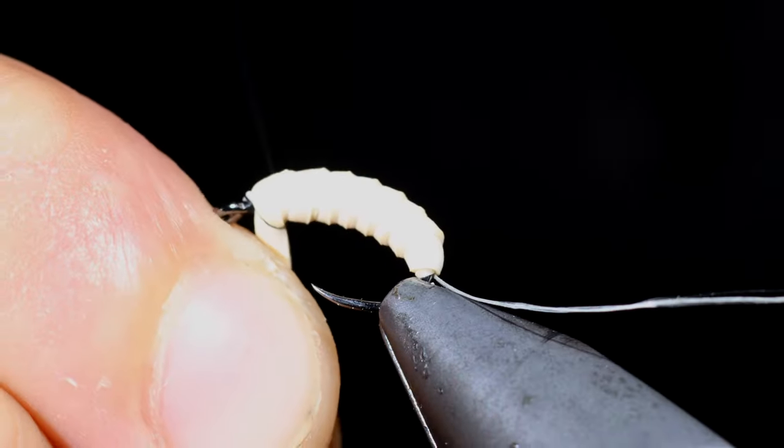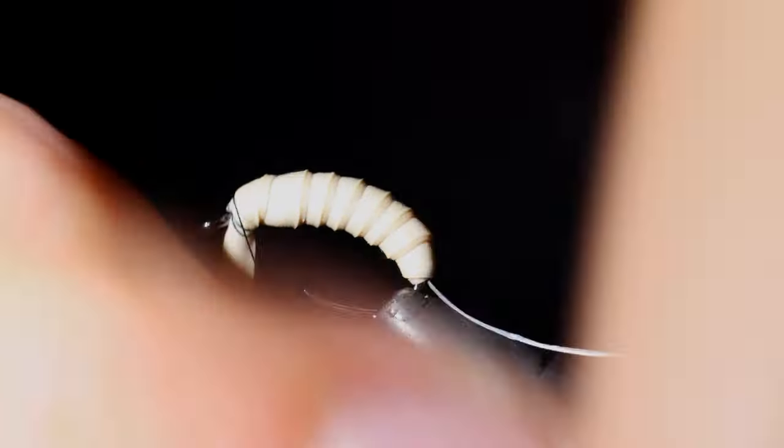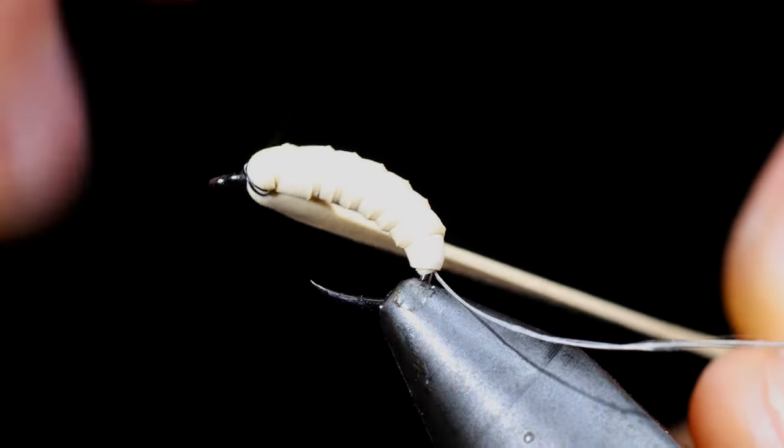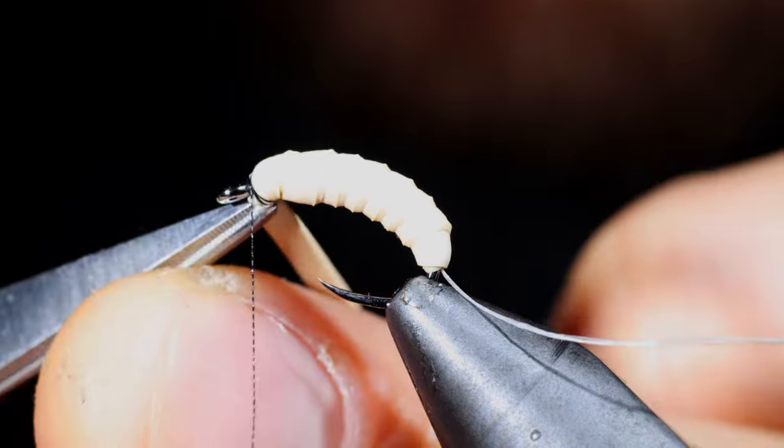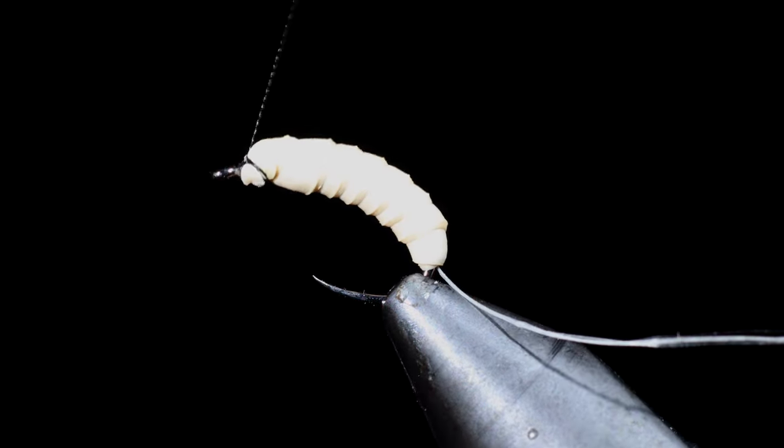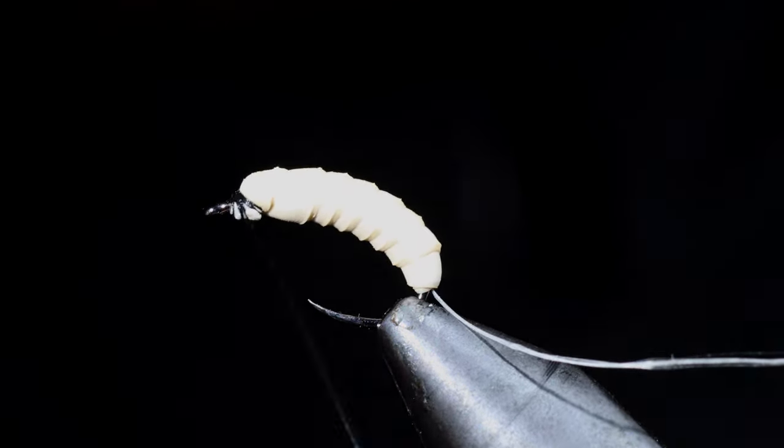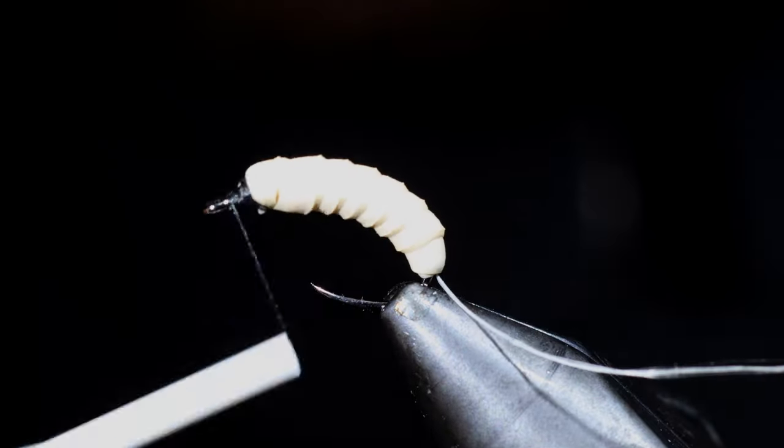Once we reach the head of the fly, we'll secure, taking thread wraps both in front and behind and then snipping it free. Further secure the tag end so it doesn't slip free and start to build up the head of our fly.